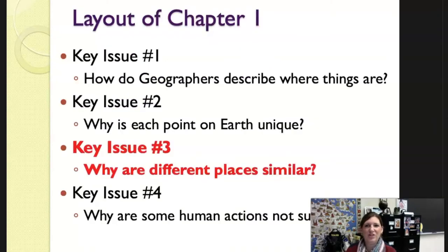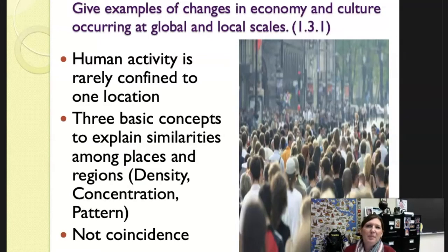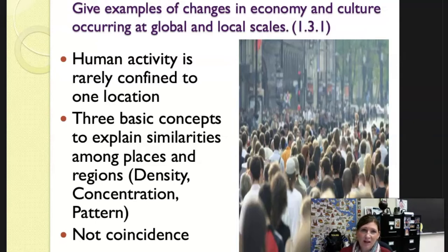In the first key issue, we talked about how geographers describe where things are. In the second key issue, we talked about why each place is unique on Earth. Now we're going to discuss why different places are similar. We're going to talk about the three basic concepts we can use to explain the similarities among places and regions.